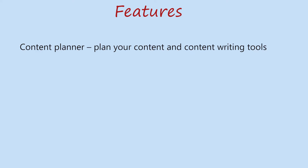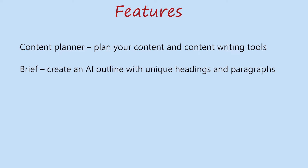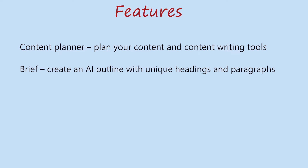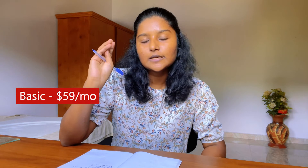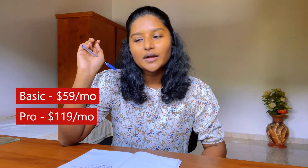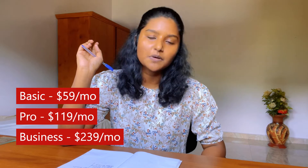The features of Surfer include a content planner to plan your content, a brief tool to create an AI outline with unique headlines, a content editor to write with guidelines and get content suggestions, an audit tool to optimize existing pages, and Keyword Surfer — a browser extension that lets you instantly check keywords in Google. Pricing has three plans: Basic at $59 per month, Pro at $119 per month, and Business at $239 per month.